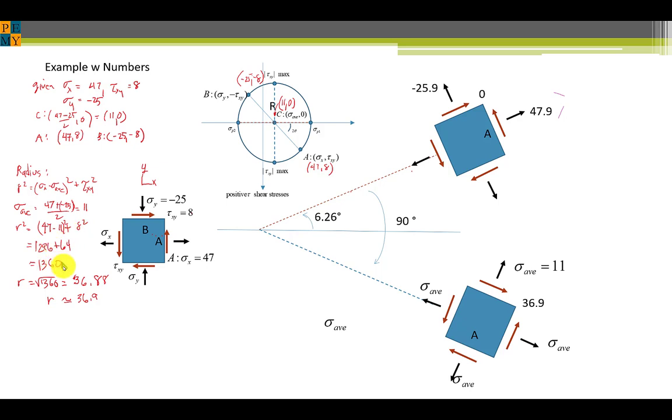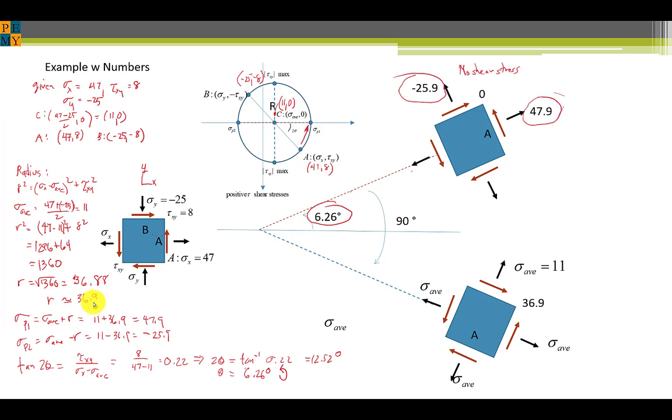Taking the square root of that we get a radius of 36.88, we'll call it 36.9. That allows us to get the principal stresses so sigma average plus r is equal to 11 plus 36.9, that's 47.9. The minimum principal stress sigma p2 is sigma average minus r, that's 11 minus the 36.9 and that's negative 25.9.